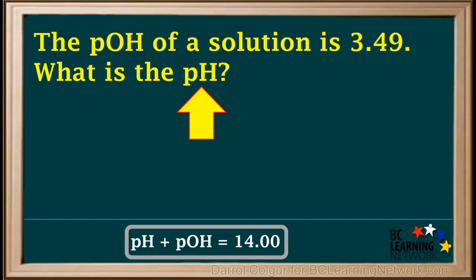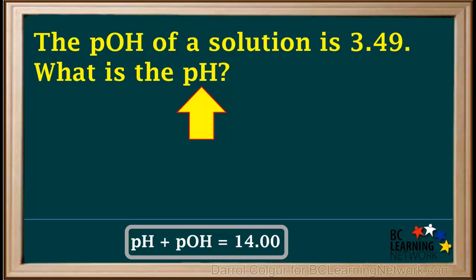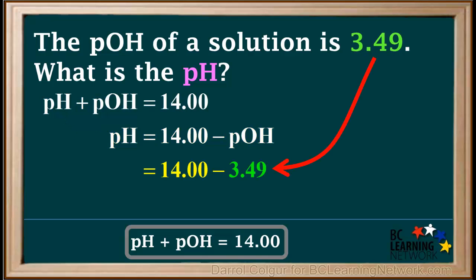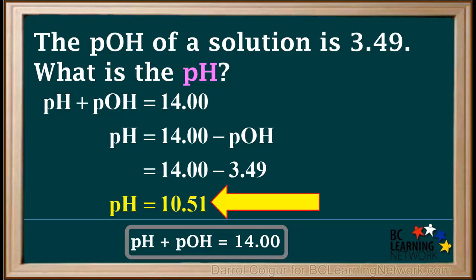Here's an example. We're told that the pOH of a solution is 3.49, and we're asked what the pH is. We're not given the temperature, so we can assume that it's 25 degrees and that pH plus pOH is equal to 14. We want to find the pH, so we'll rearrange to solve for pH, giving us: pH equals 14 minus pOH, which is 14 minus 3.49, and that equals 10.51. So the pH is 10.51.